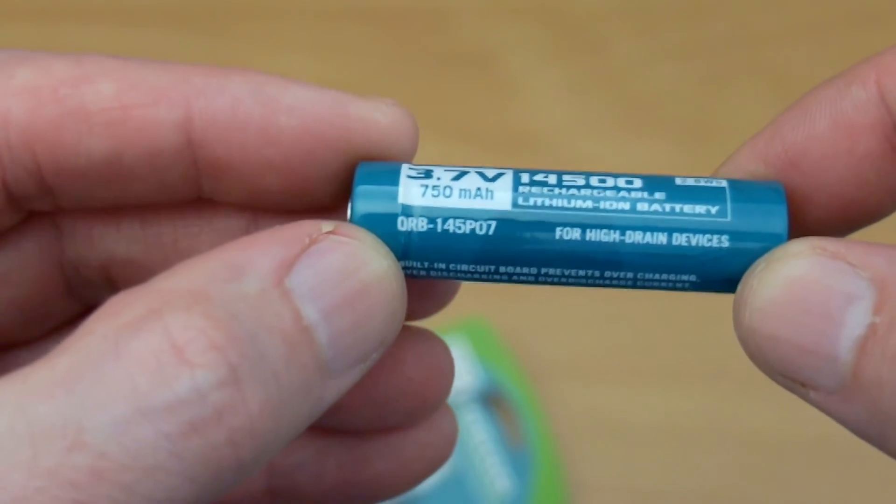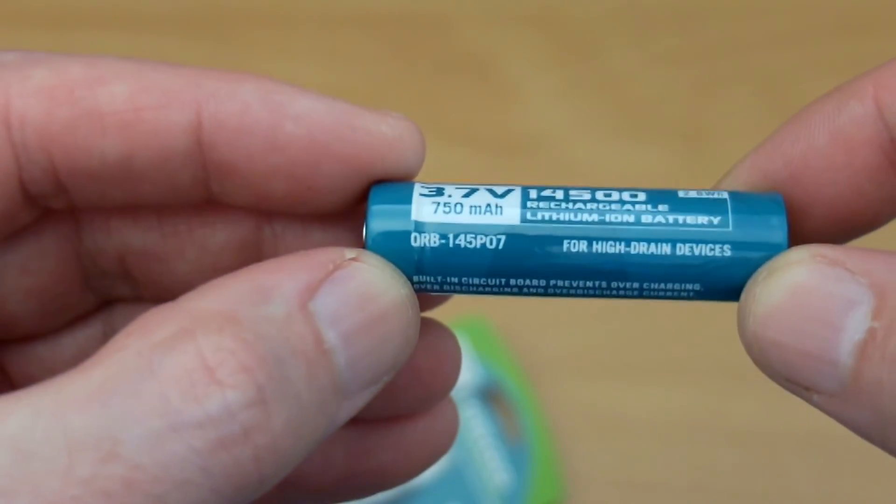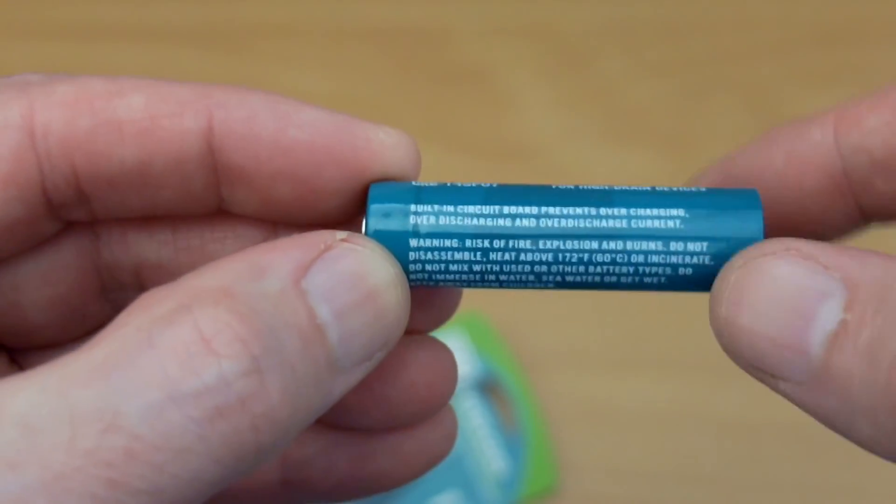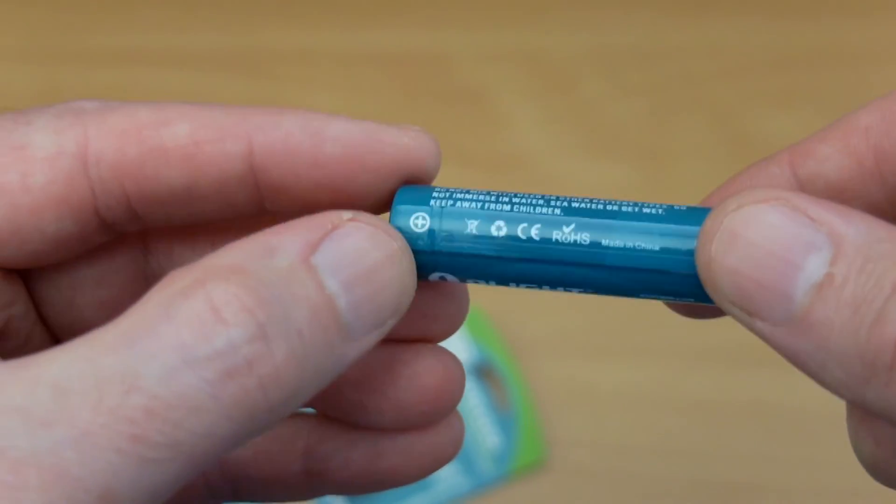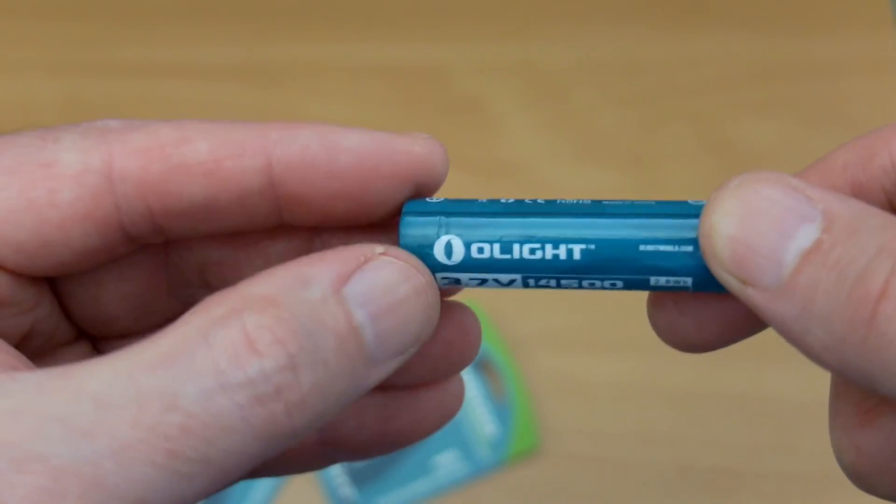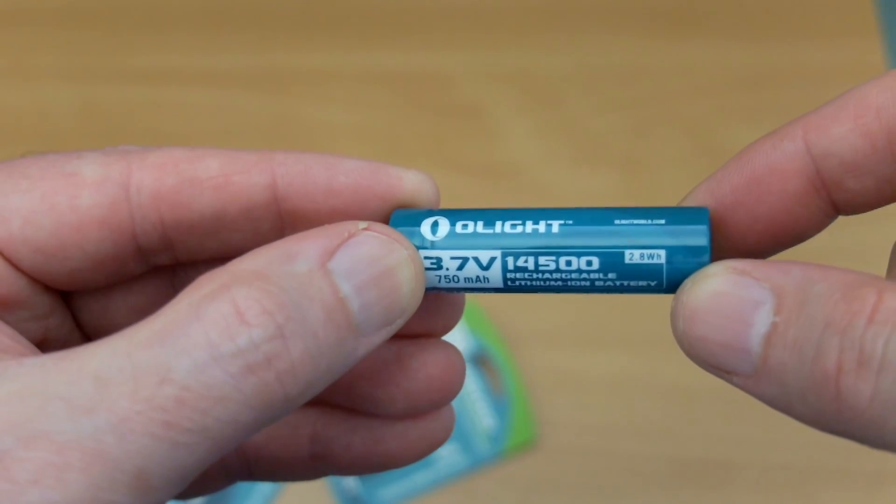So overall, no complaints for these cells. Do check those measurements though, and the button top, which is a bit wider than the standard one on an alkaline or nickel metal hydride cell. Don't forget to subscribe and I will see you in the next video.